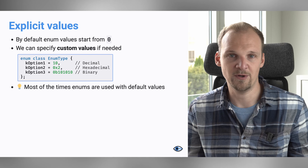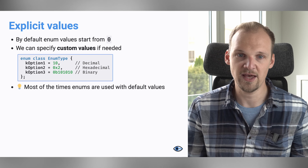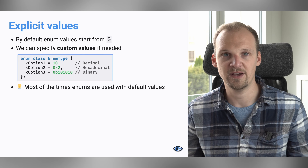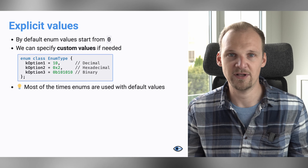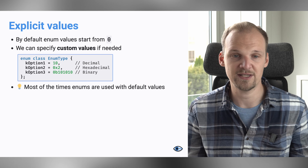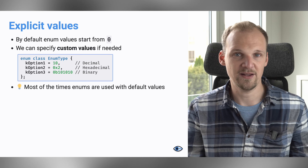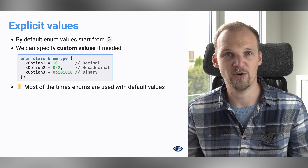With that example out of the way, I want to talk about one more thing about enums. By default, the values of the options start from zero. But if you want, you can always specify the value for each option in your enum. For example, if I want it to be set to 10, I can do that. And I can use hexadecimal or binary or whatever other numbers I want, as long as they are of the type that I provide as the base type of my enum.